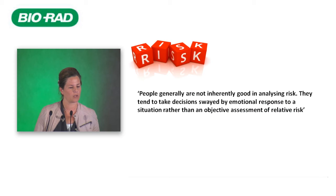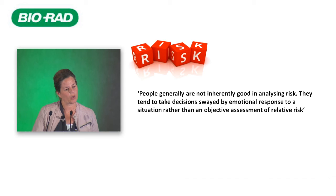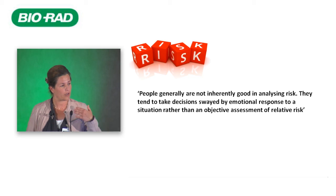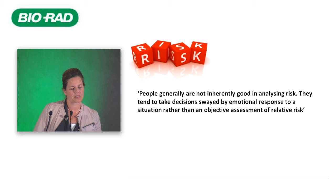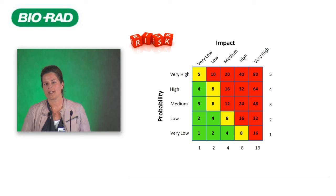The point is that risk is very context-dependent, and people are generally not very good at analyzing risk — they tend to make decisions based on emotional responses rather than objective assessment of relative risk. A structured approach to documenting and analyzing risk can improve this process. One method is to semi-quantify your risk: scale probability from very low to very high (1–5) and impact from very low to very high using a doubled scale (1, 2, 4, 8, 16), so that a risk with very low probability but very high impact still falls in the red zone. Where you draw the border between red and yellow areas is arbitrary to your laboratory.